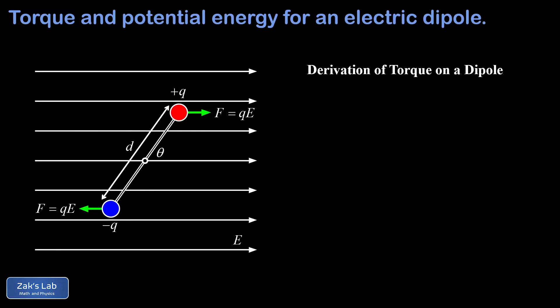We get things started with our torque analysis of a dipole oriented at angle theta with respect to the electric field direction, with charges of plus q and minus q. The electric force magnitude is the same on each charge — that's qE — but for the positive charge it points in the same direction as the electric field, and for the negative charge it points opposite. So those two forces both contribute to a total clockwise torque on this dipole.